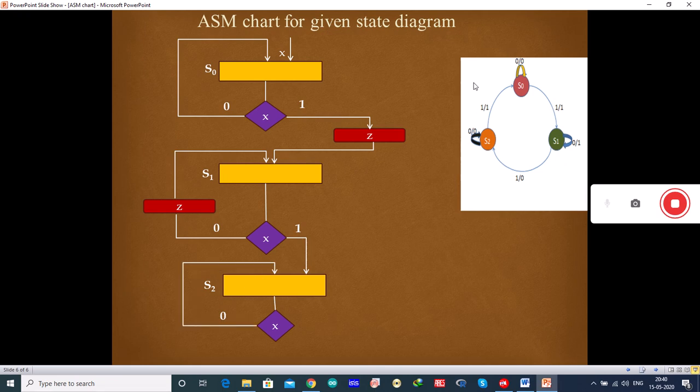And when input is 1, you have output as 1. So, again, when input is 1, you need to draw the condition box. So, when input is 1, it goes to S0.